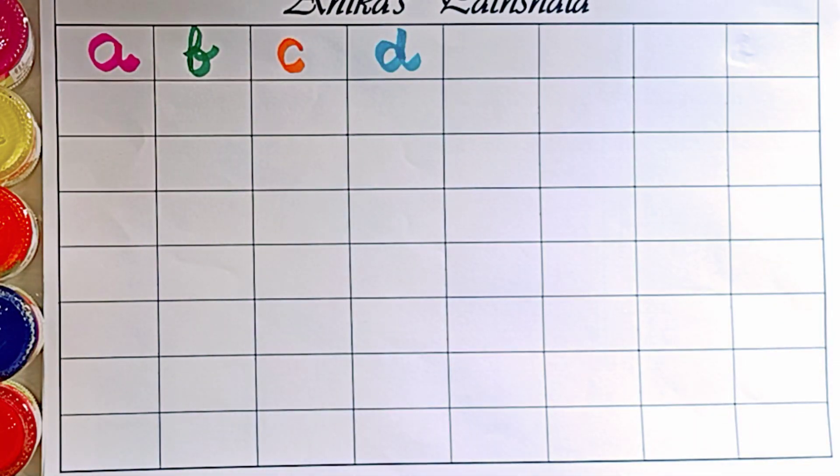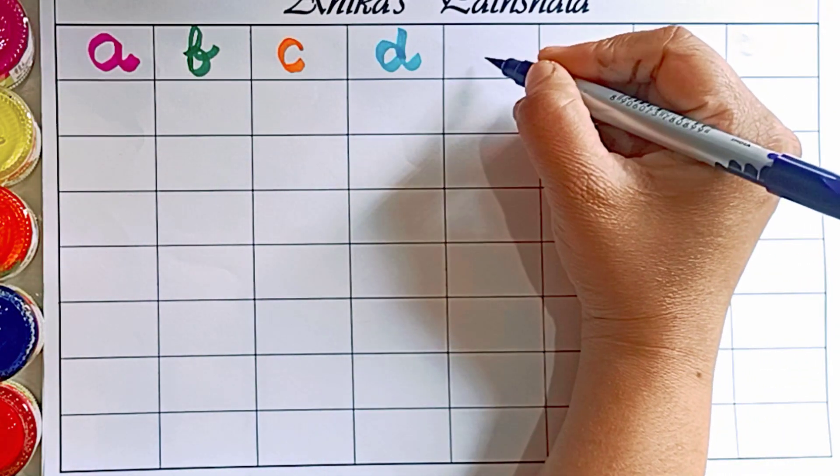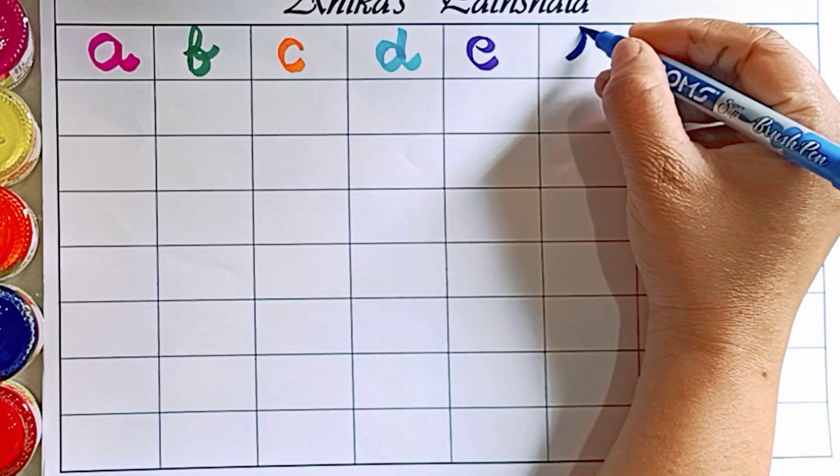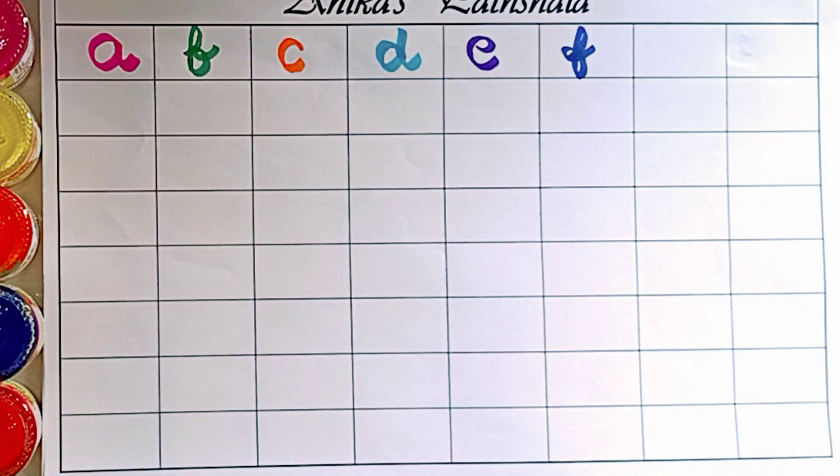D. D is for doctor. E. E is for ear. F. F is for fox.